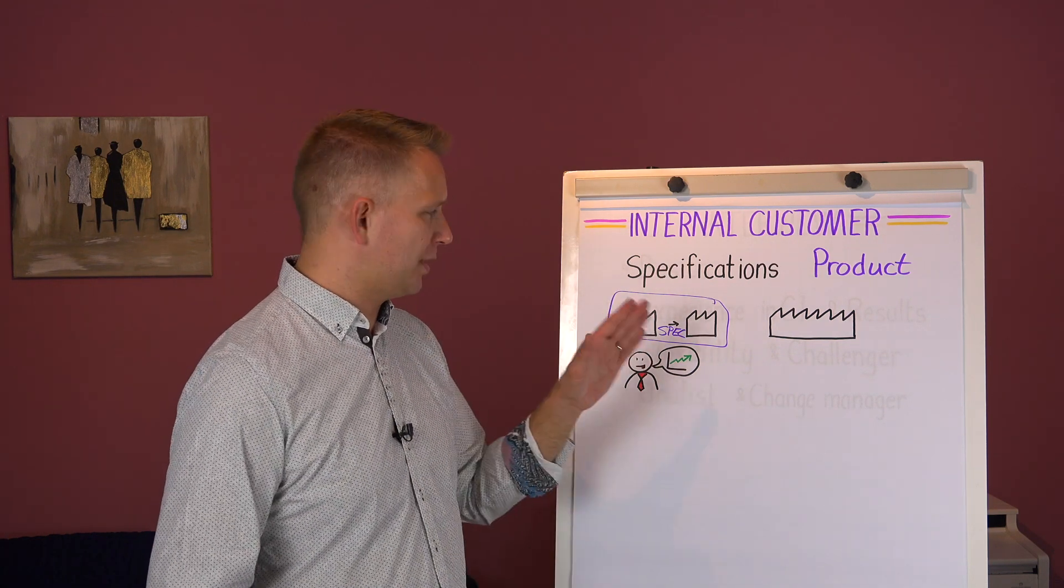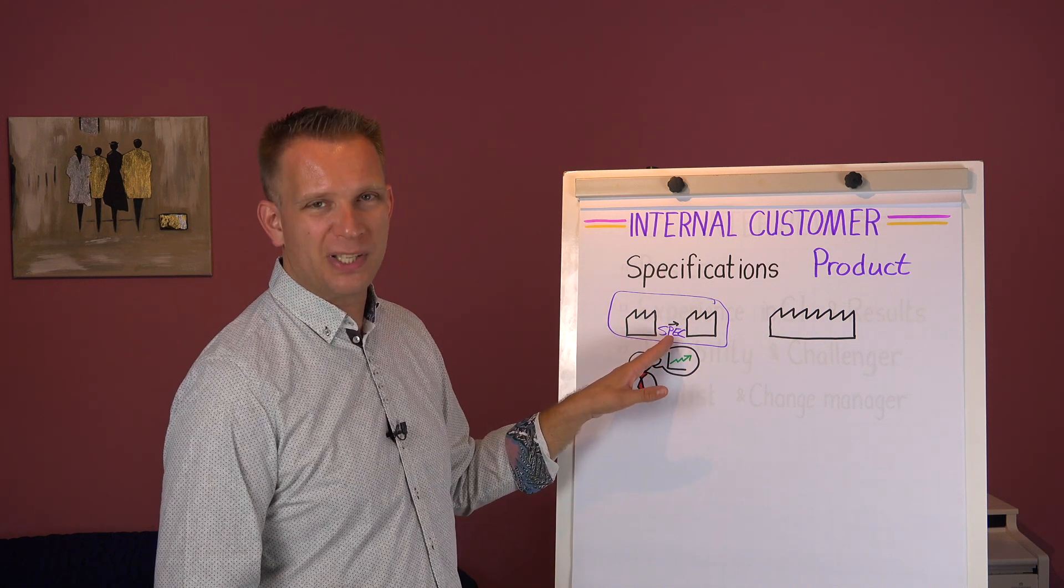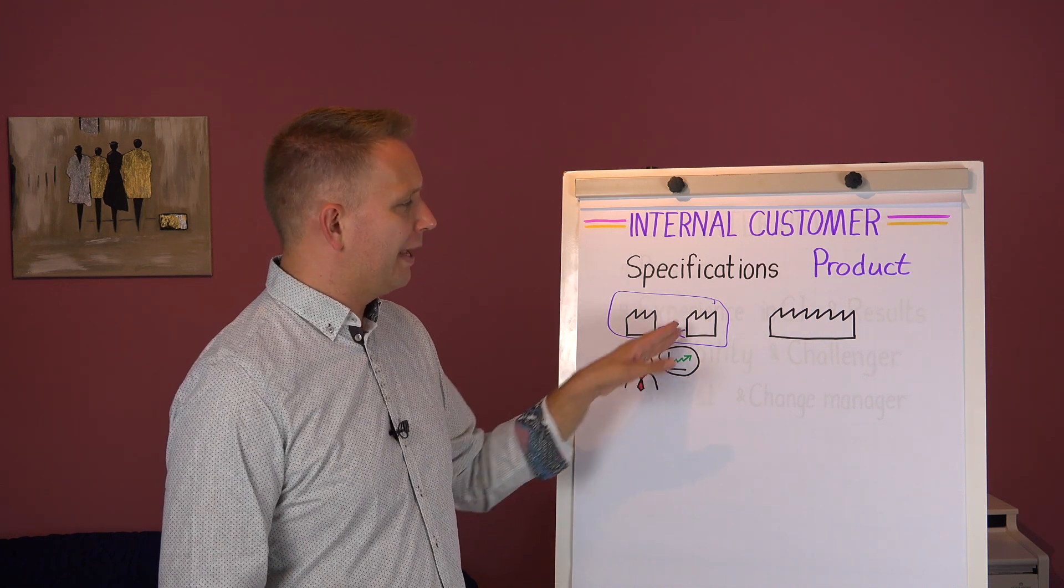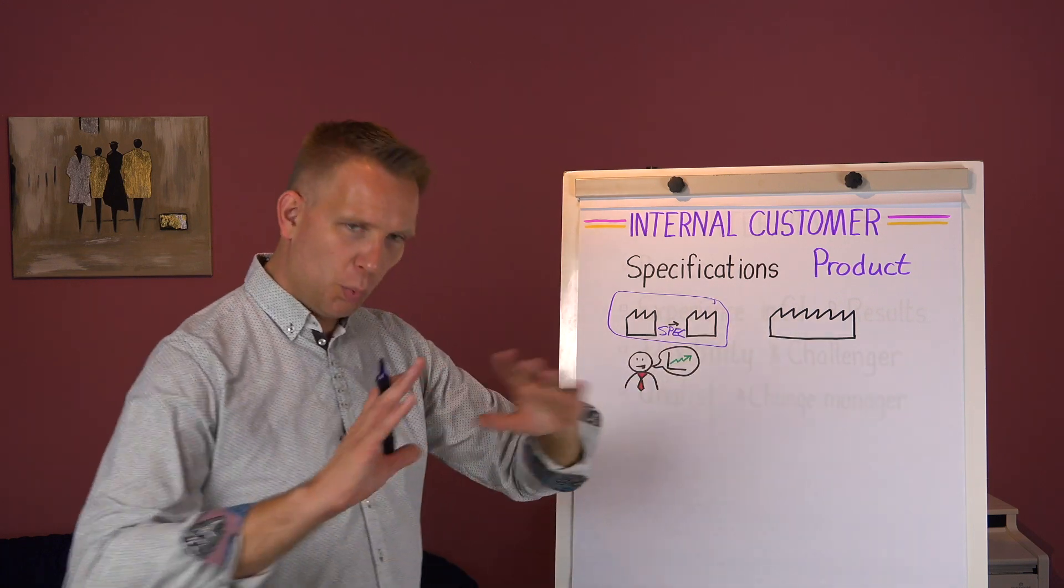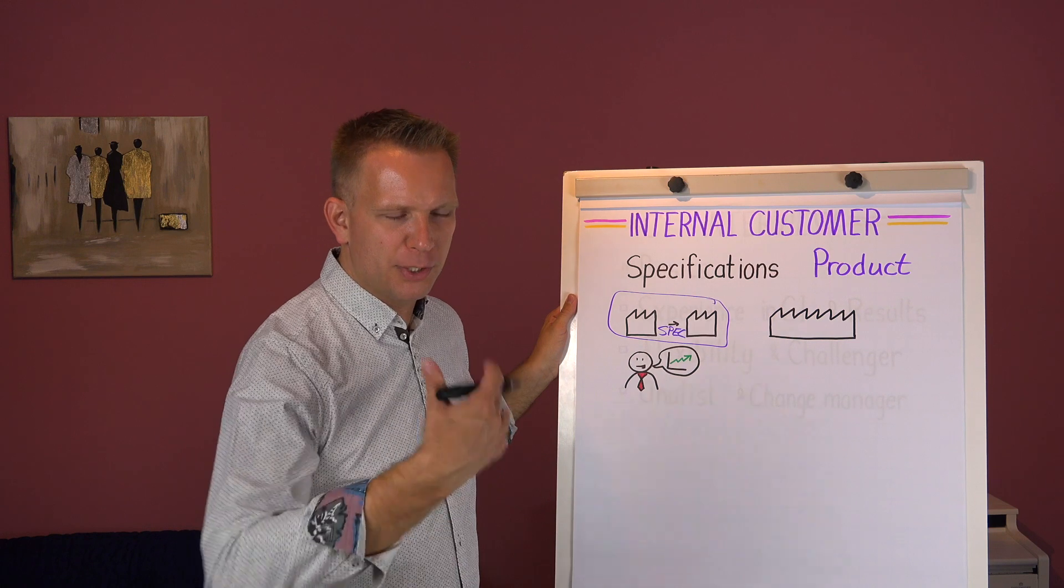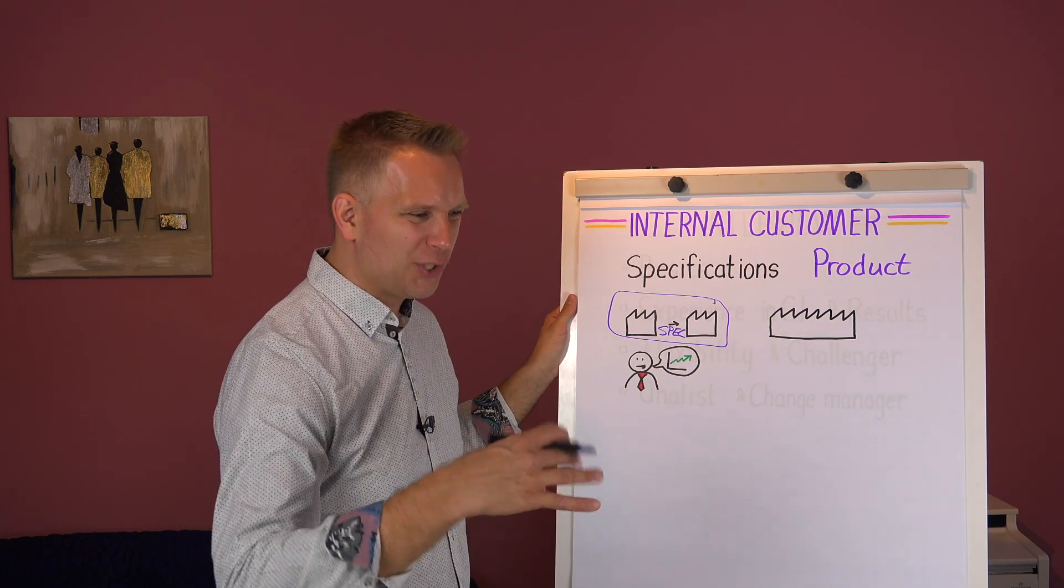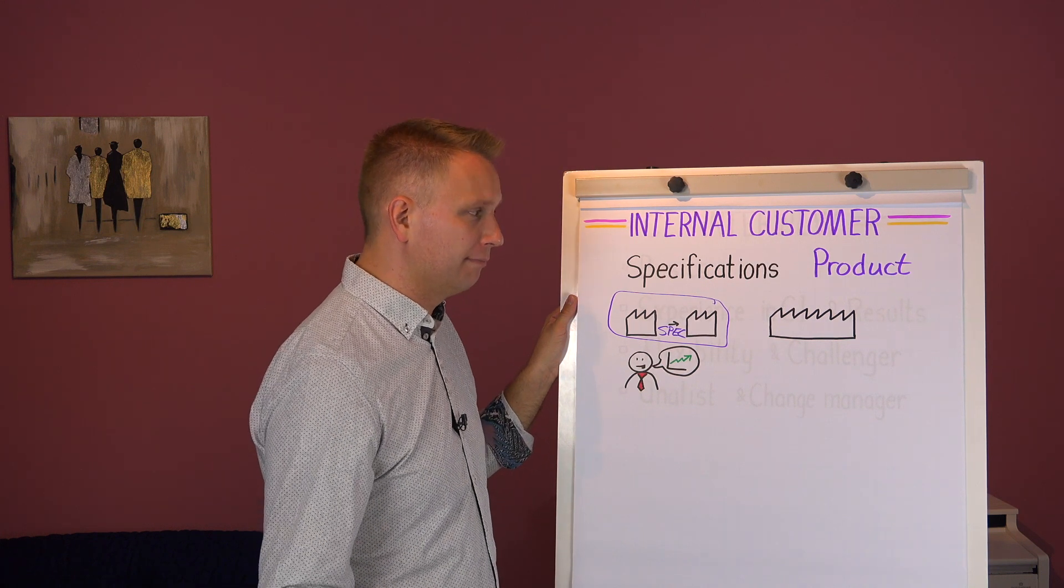Right now today it may hurt a bit less for this factory, but this still really hurts your total production effectiveness. So these are specifications. 53 millimeters plus or minus half a millimeter, whether they come from internal or external customers doesn't really matter.